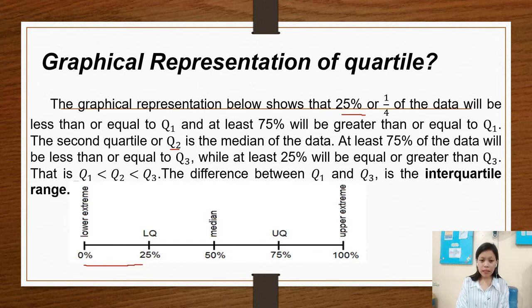Thus, Q sub 1 is less than Q sub 2 and less than Q sub 3. The difference between Q sub 1 and Q sub 3 is the interquartile range.